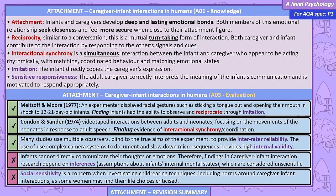Condon and Sander videotaped interactions between adults and neonates, focusing on the movements of the neonates in response to adult speech, finding evidence of interactional synchrony and coordination. Many studies use multiple observers, blind to the true aims of the experiment, to provide inter-rater reliability. The use of complex camera systems to document and slow down micro-sequences provides high internal validity. However, infants cannot directly communicate their thoughts or emotions, so findings depend on inferences about the infant's internal mental states, which are considered unscientific.